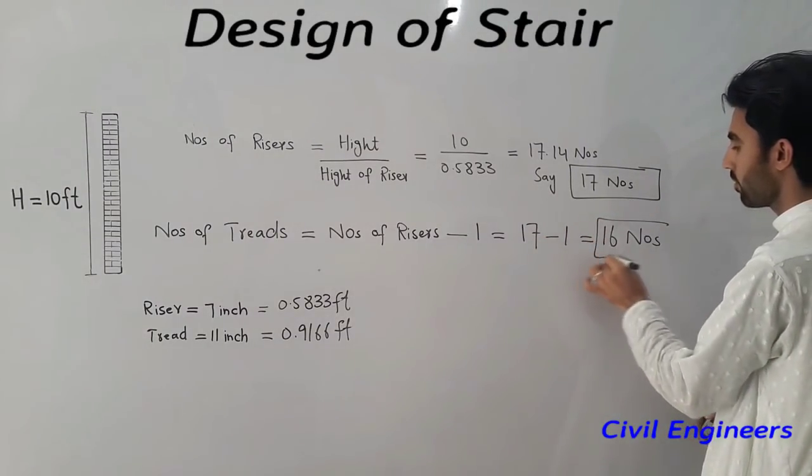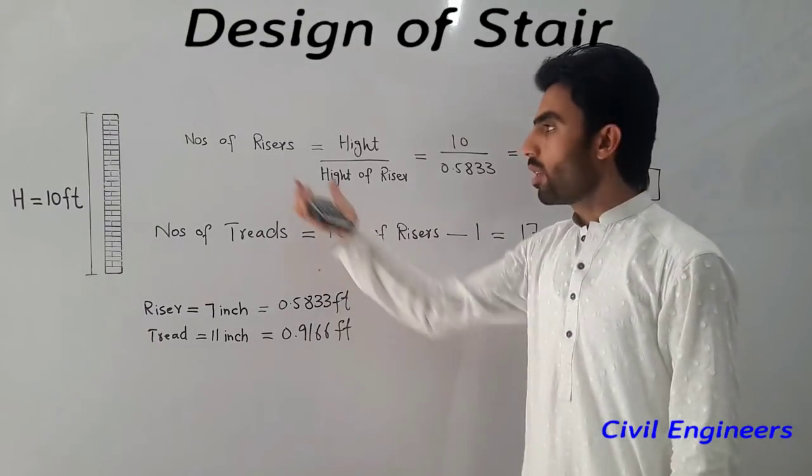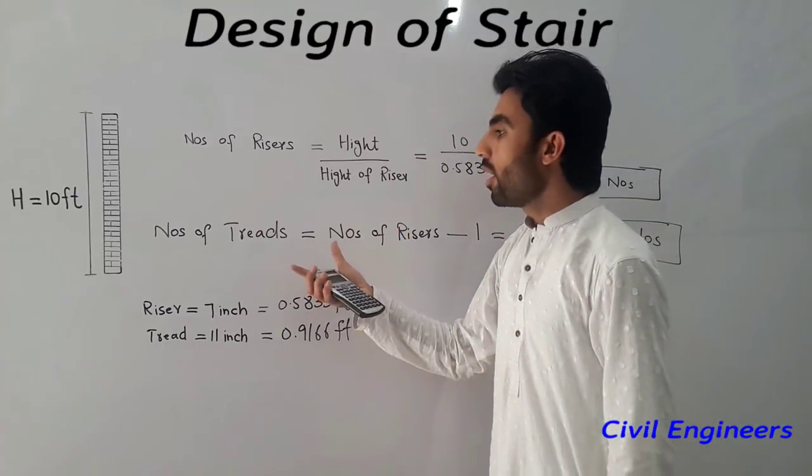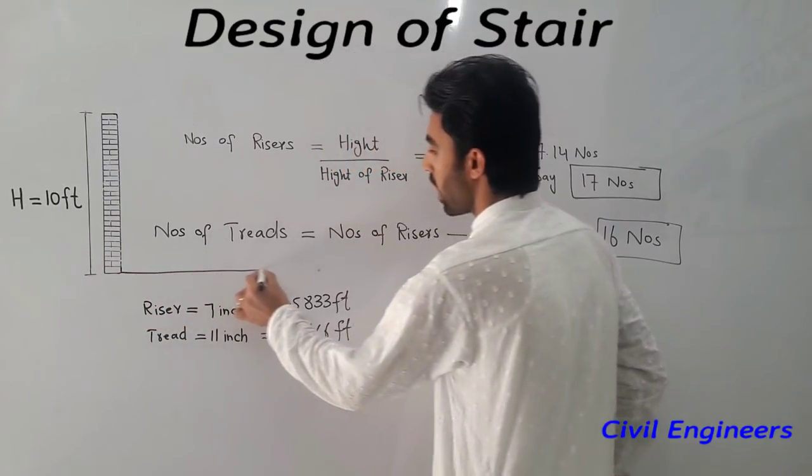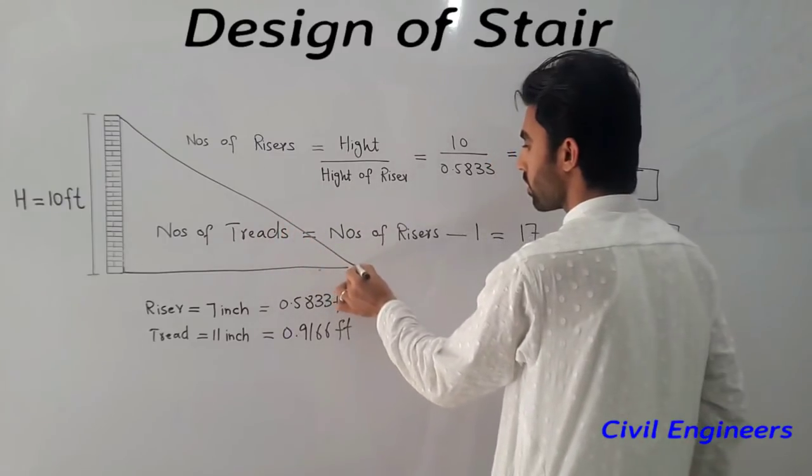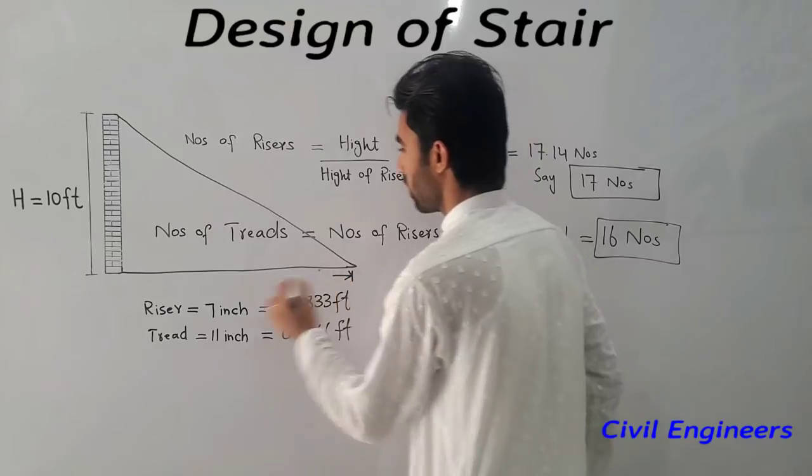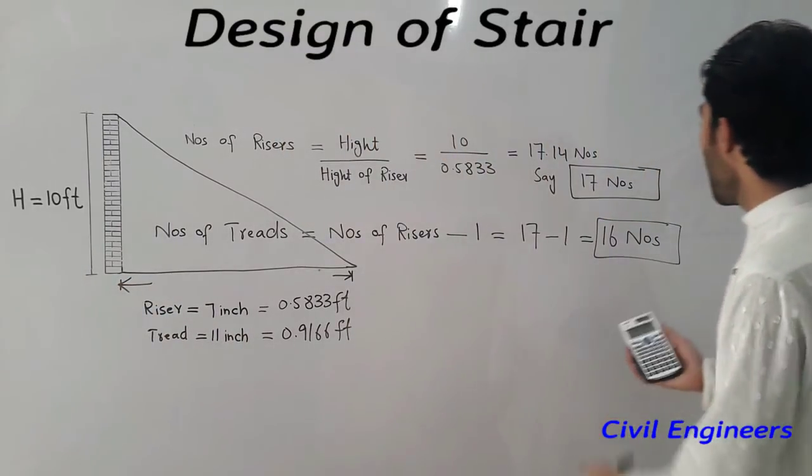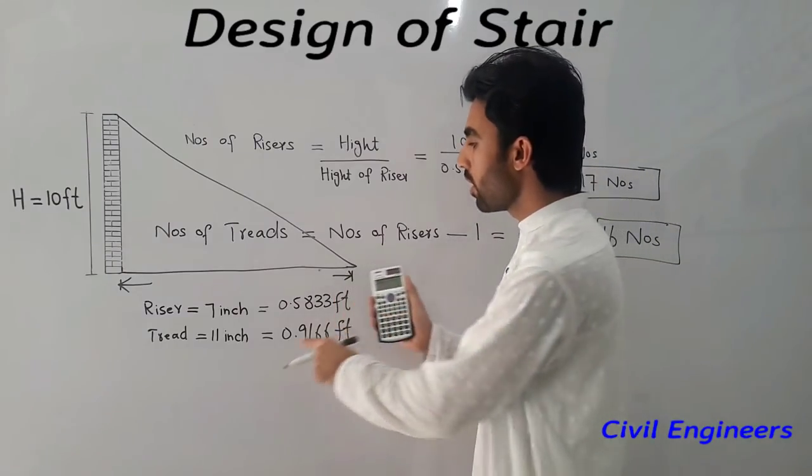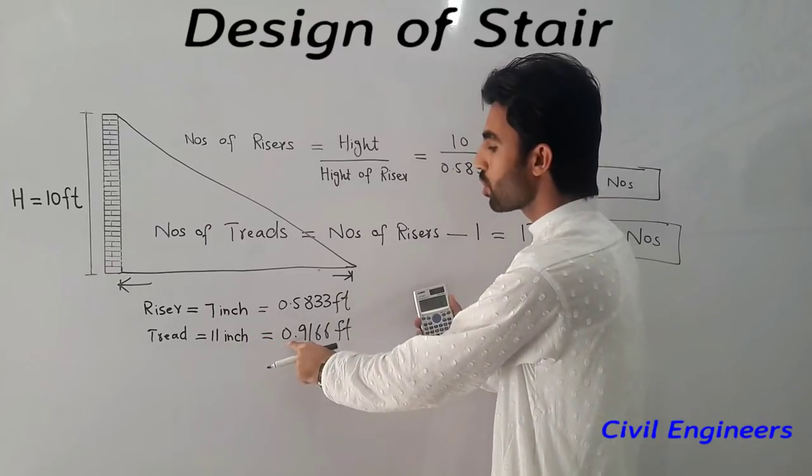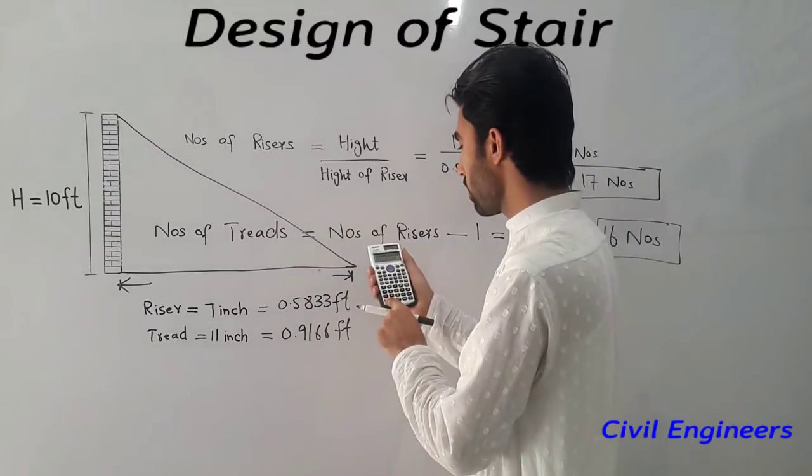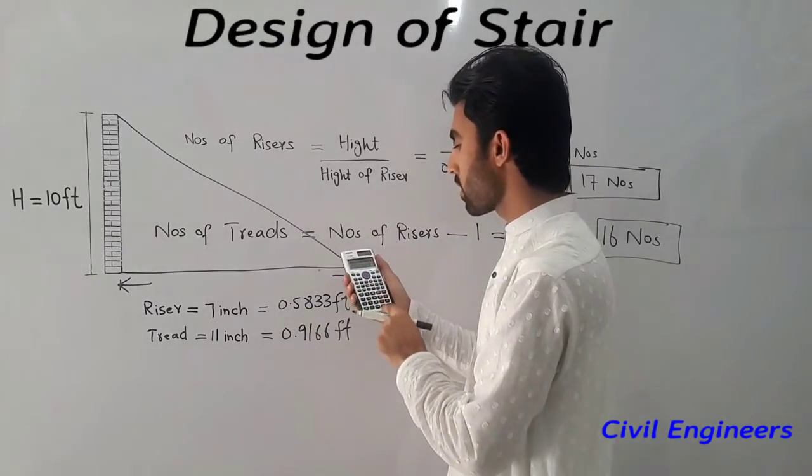Now I will show you how much length is required here. For this, I will find out the distance. So I have 16 treads, 16 number of treads. So 16 multiply by 0.9166 feet. 16 is the number of treads and the length of each tread is 0.9166, so it comes 14.66 feet.